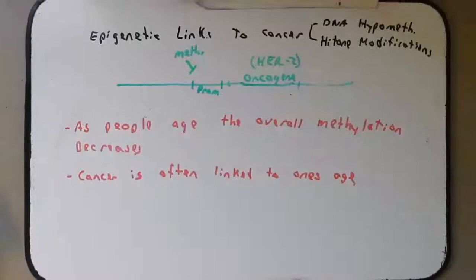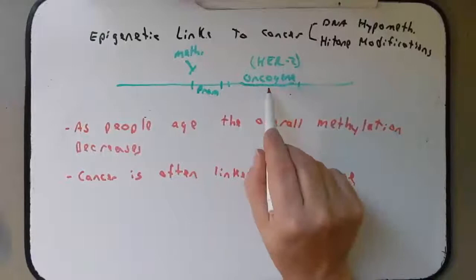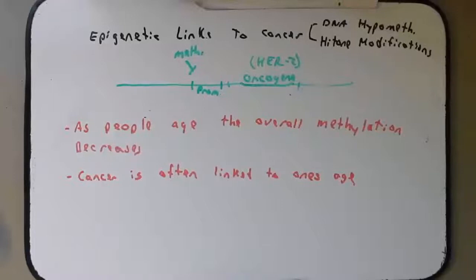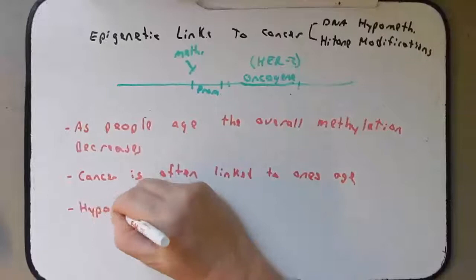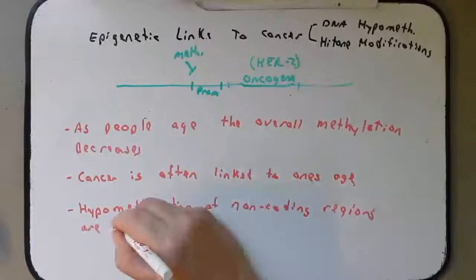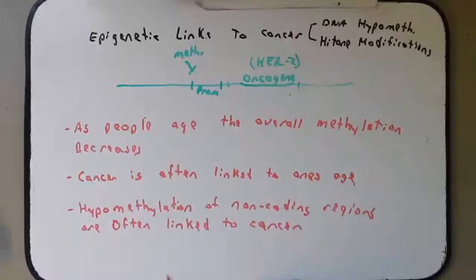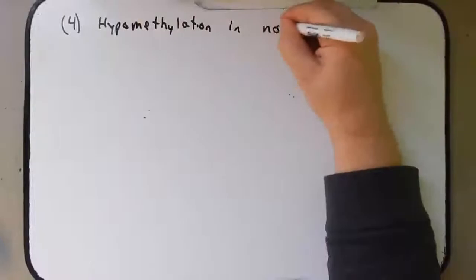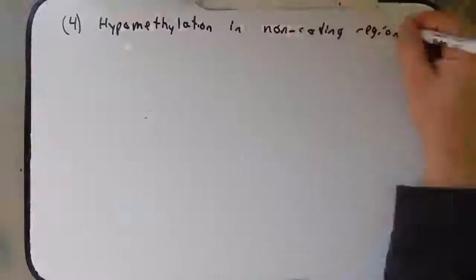Now it's easier to imagine how not-methylating a promoter of a proto-oncogene could cause it to become an oncogene. However, much of the hypomethylation that is linked to cancer is found in non-coding areas. Hypomethylation of non-coding regions is often linked to cancer — in fact, maybe even more so than the hypomethylation of specific oncogenes. I want to talk about four examples of hypomethylation in non-coding regions and how that can set the stage for cancer.